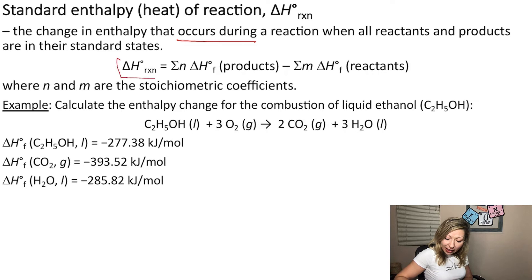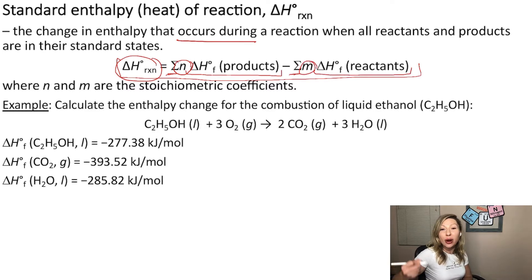And it can be calculated using this formula, which is actually really simple to use. The enthalpy change of the reaction equals the sum of the heat of formation of the products multiplied by the stoichiometric coefficients from the equation minus the sum of the heat of formation of the reactants multiplied by the stoichiometric coefficients from the equation.